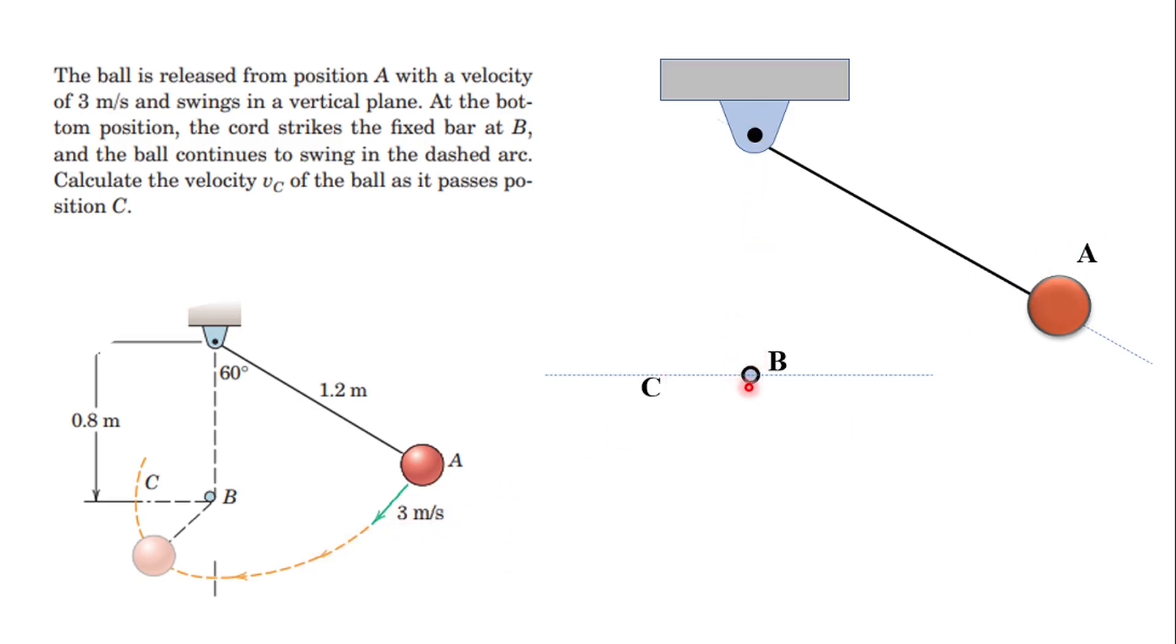At the bottom position, the cord strikes the fixed bar at point B, and then the ball continues to swing in the dashed arc. Calculate the velocity vc of the ball as it passes position C.